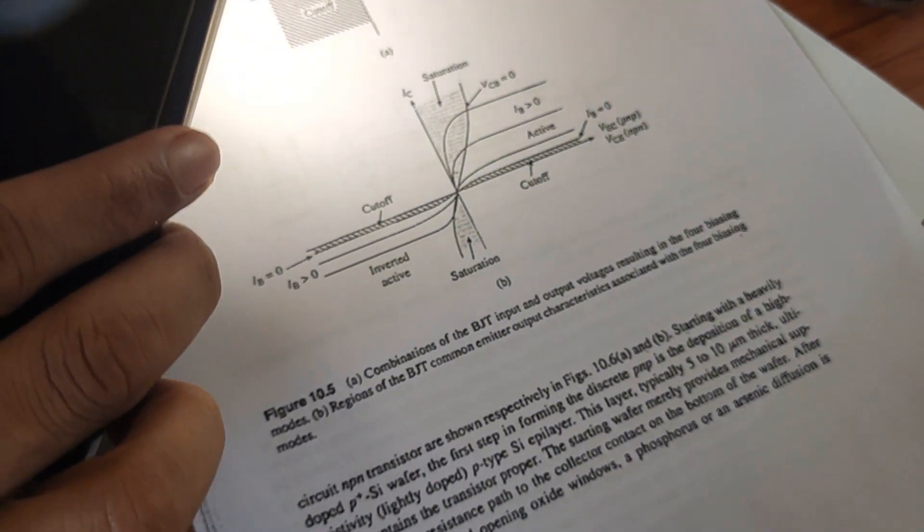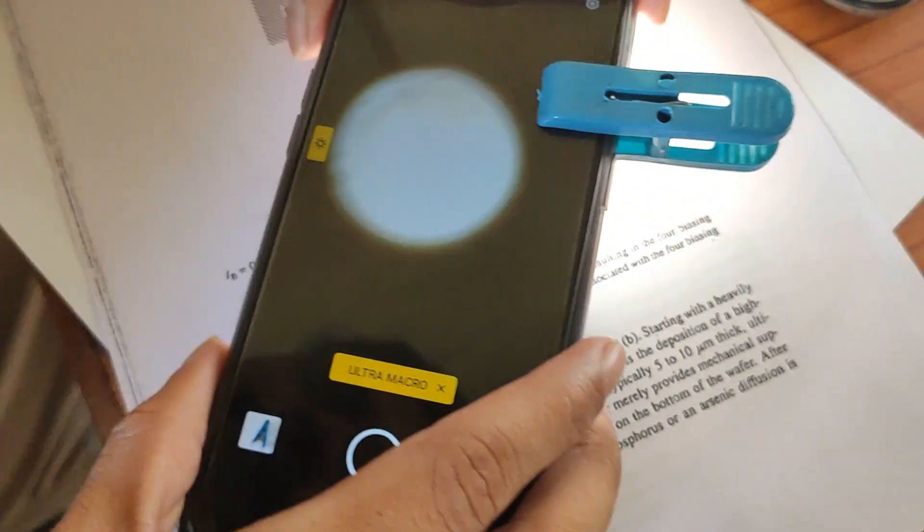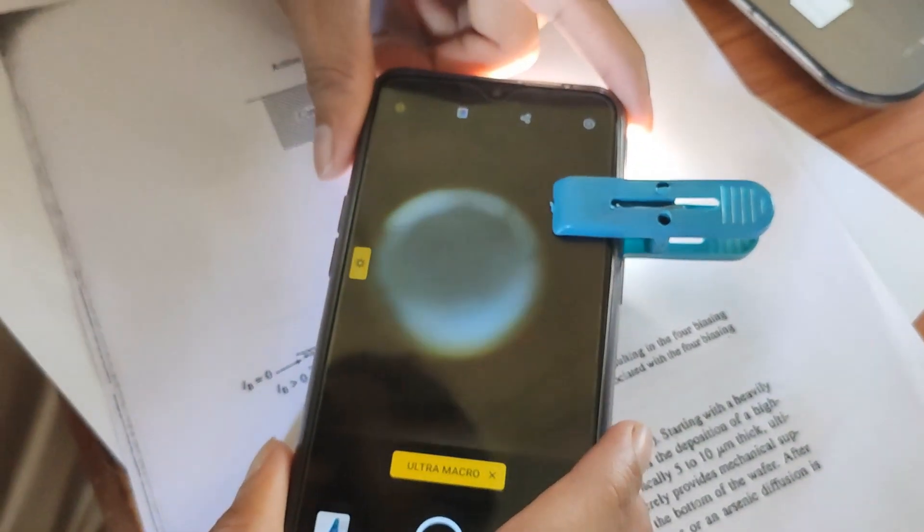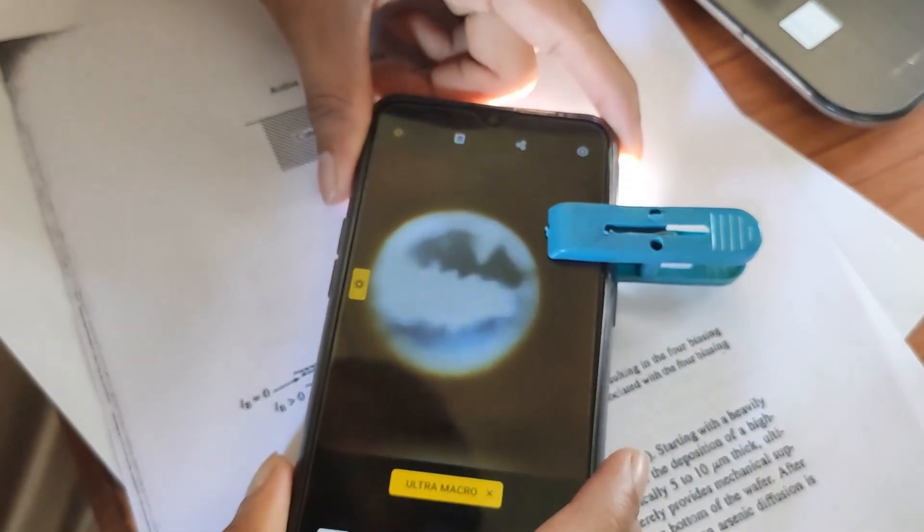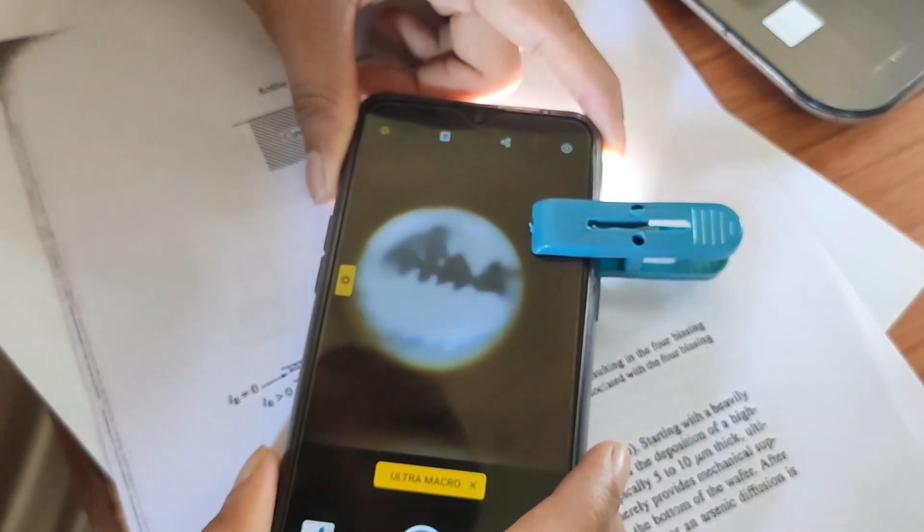Now we will see letters on paper. Here you can clearly see places where ink is not filled.